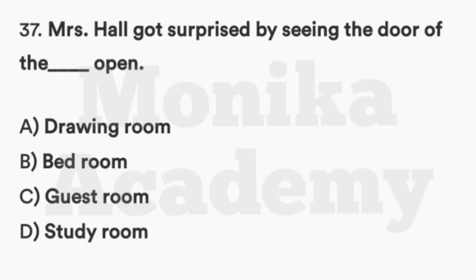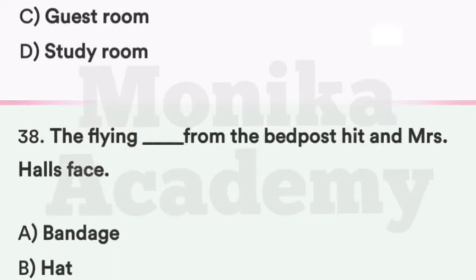Question 37: Mrs. Hall was surprised seeing the open doors of the ___. Option A: Drawing room. Option B: Bedroom. Option C: Guest room. Option D: Study room. The correct answer is C, guest room — जब Mrs. Hall ने guest room के दरवाज़े खुले देखे तो वो surprised रह गई, क्योंकि Griffin हमेशा doors lock रखता था.